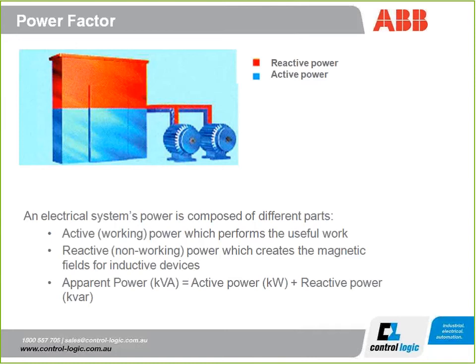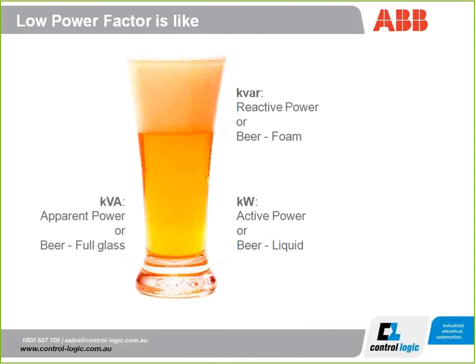The third variable is apparent power, referred to as KVA, which basically equals your active power in kilowatts plus your reactive power in kilovars. A great analogy — useful when explaining power factor to someone from a non-electrical background — is the beer glass analogy. Think of the overall glass as your apparent power or KVA. Inside the glass we've got the beer, which is the kilowatts or active power doing useful work. And then we've also got some foam, which is reactive power not performing any useful work.